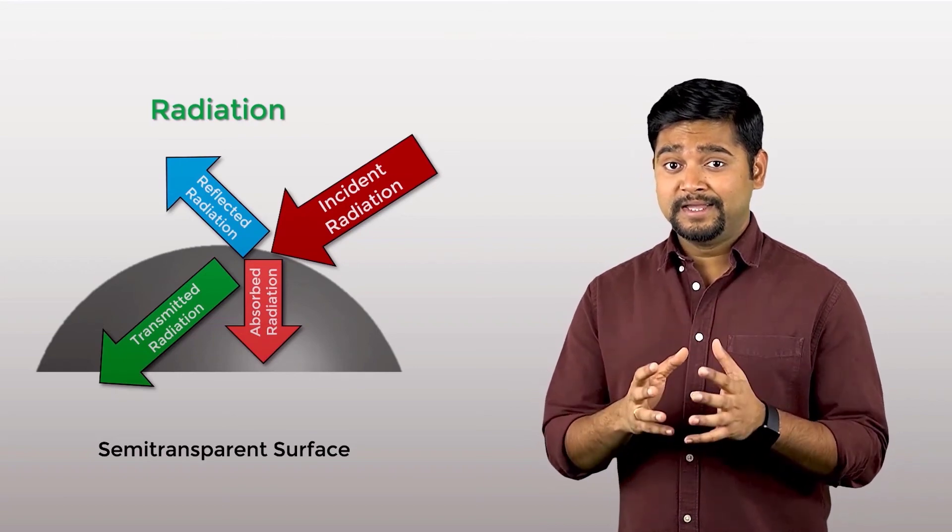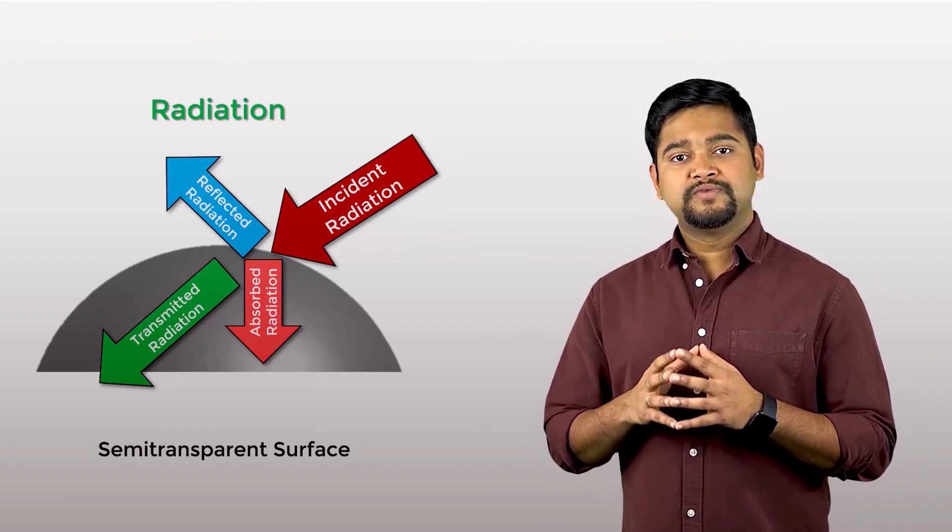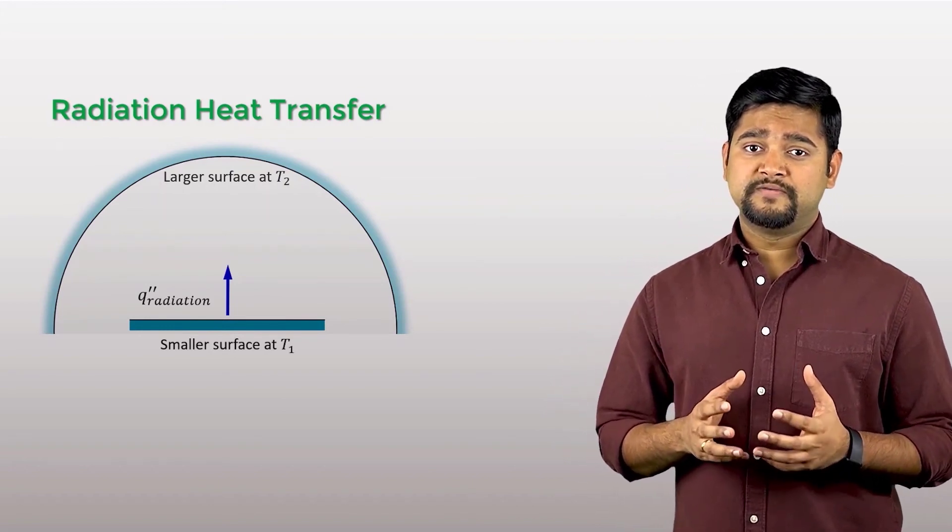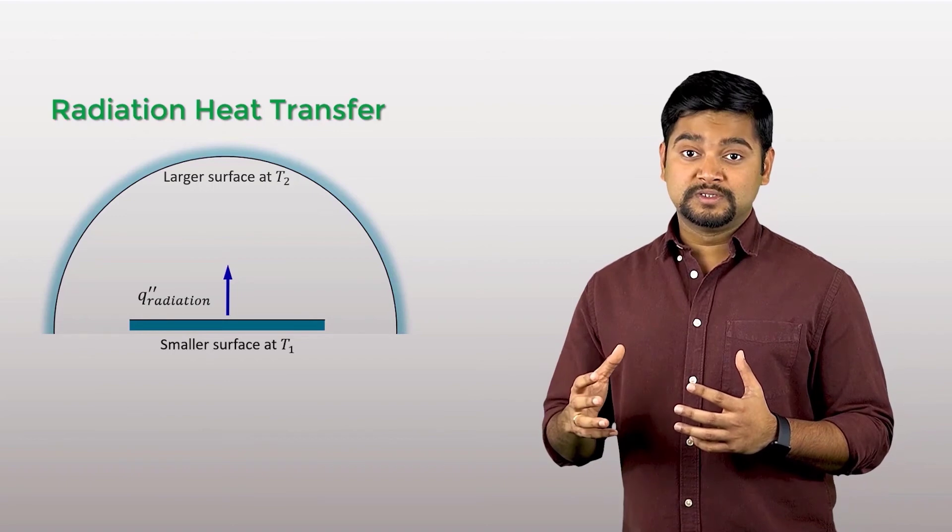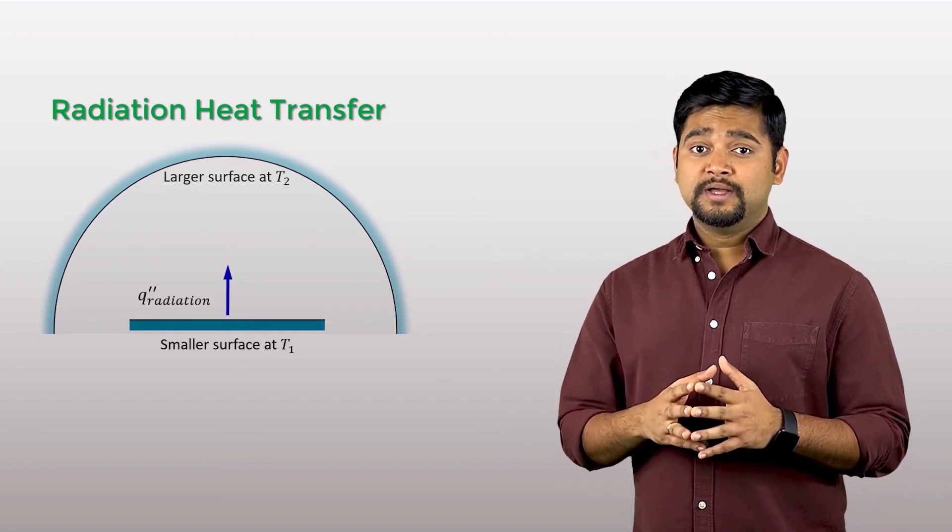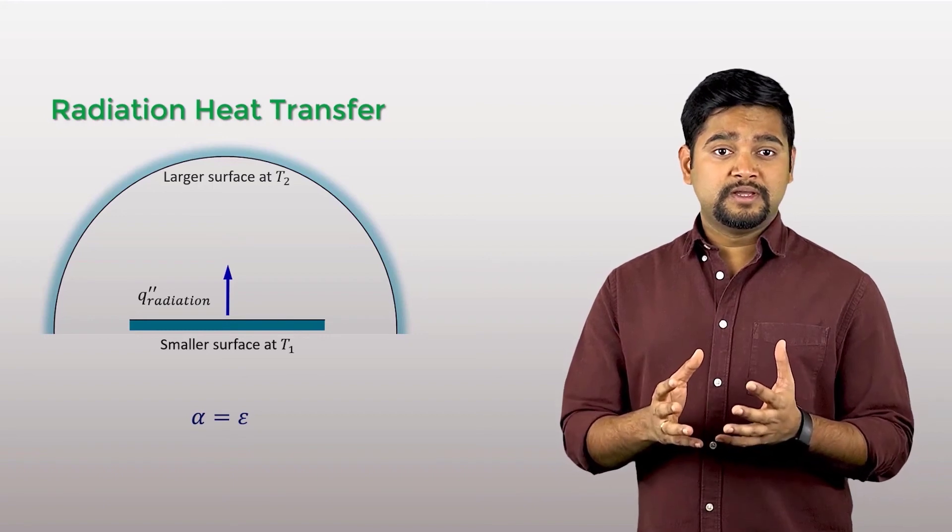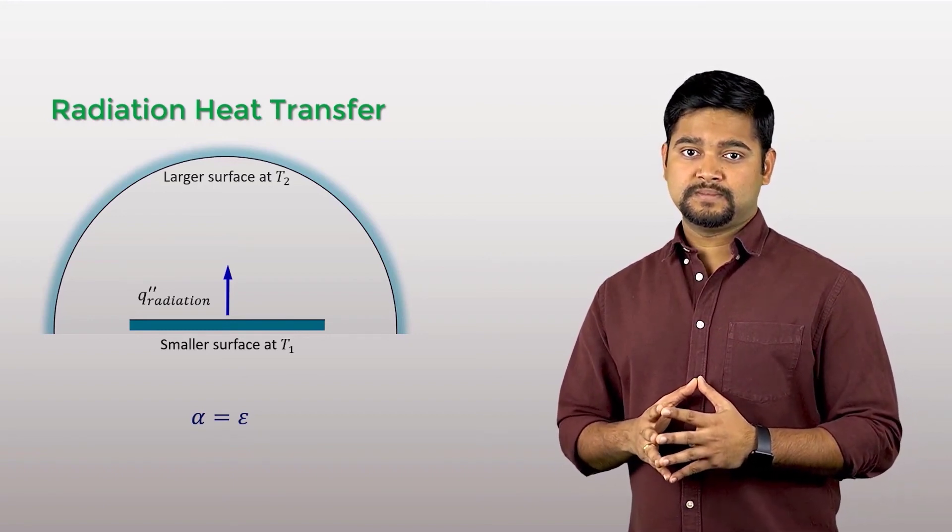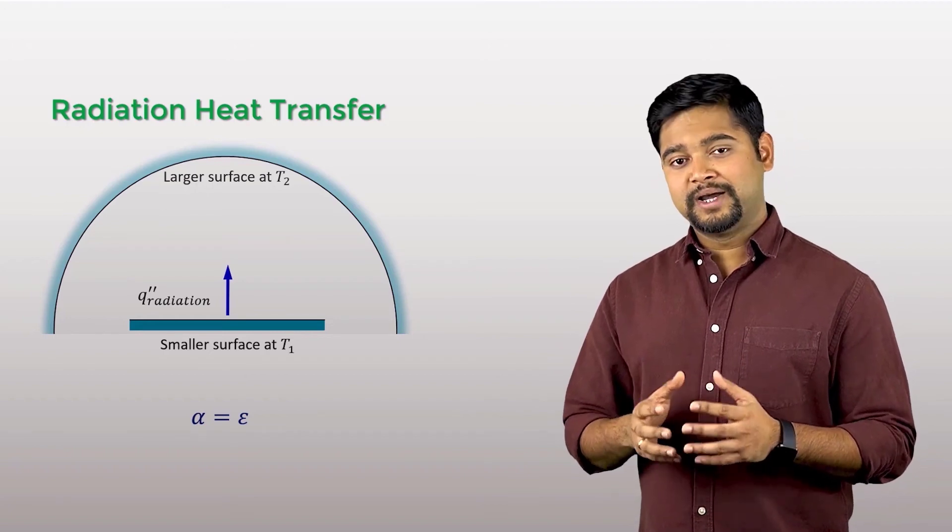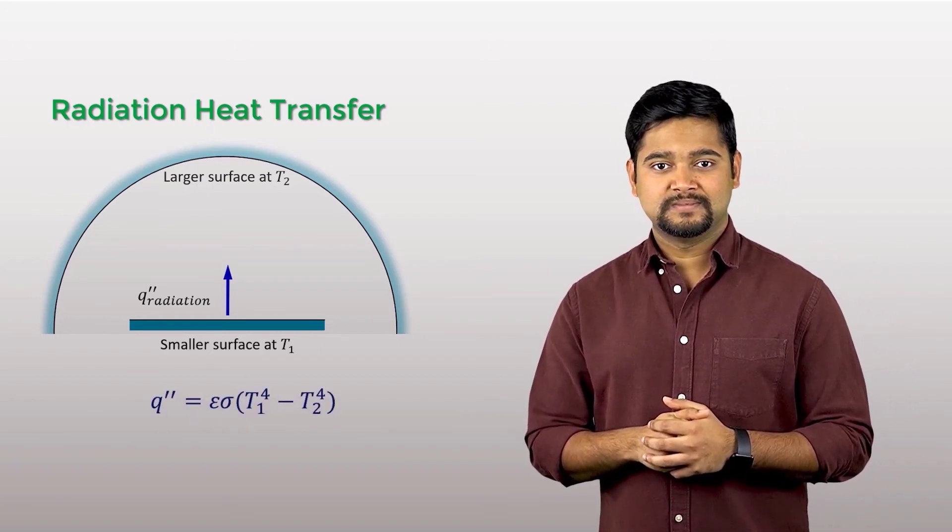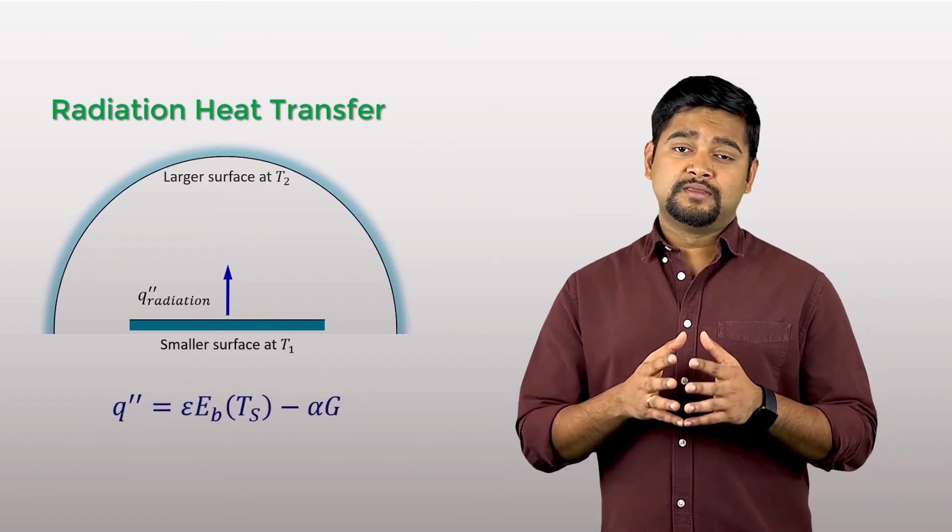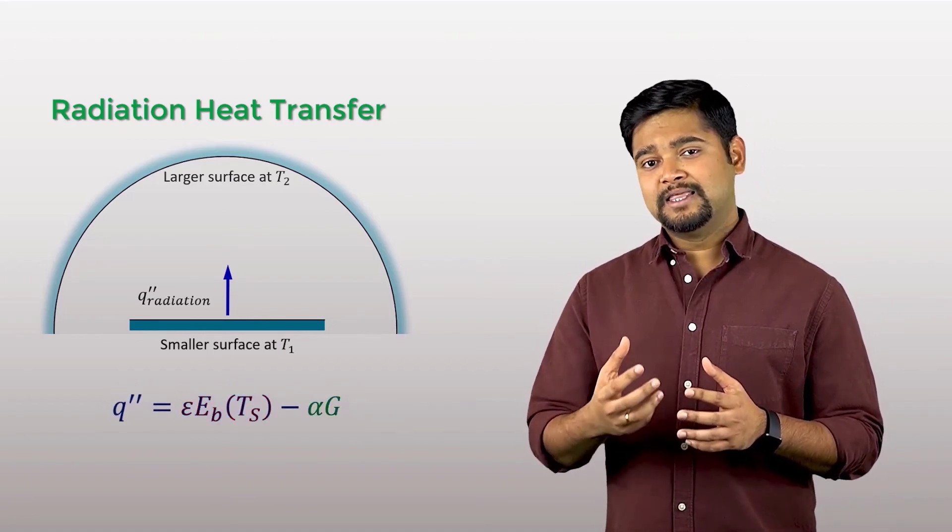Now that we have an idea of the underlying mechanisms of radiation, let's formalize the radiation heat transfer. Consider the radiation exchange between a small surface at T1 and a much larger isothermal surface which is completely surrounding the smaller surface at T2. We assume that the surface is a gray surface meaning the absorptivity is equal to the emissivity for the surface. The net rate of radiation heat transfer per unit area from the surface can be expressed by the expression shown here. This equation represents the difference between the thermal energy being released due to radiation emission and that which is being absorbed.